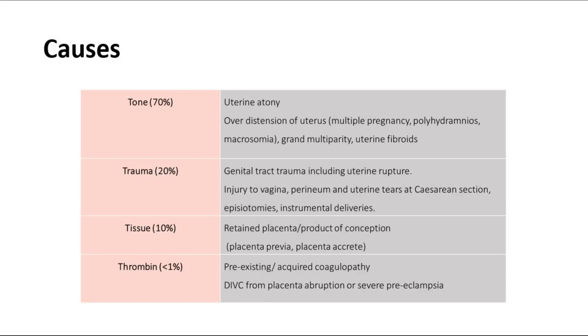For trauma, it could be genital tract trauma including uterine rupture, or any trauma causing injury to the vagina, perineum, and uterine tear during caesarean section, episiotomy, or instrumental deliveries.